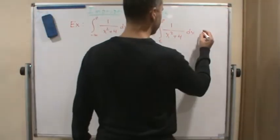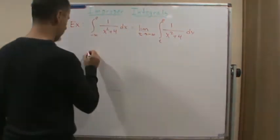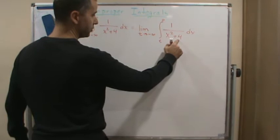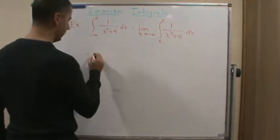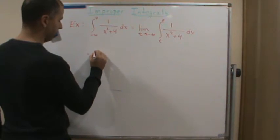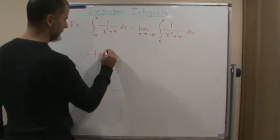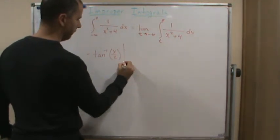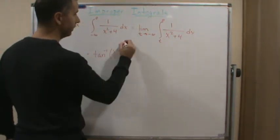So if we integrate this, since a is 2 here because this is 2 squared, what we're going to end up getting is tangent inverse of x over 2, evaluated from t to zero.